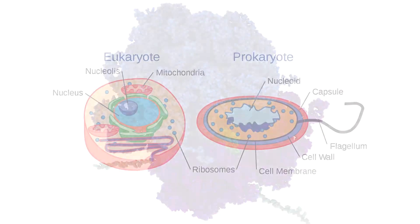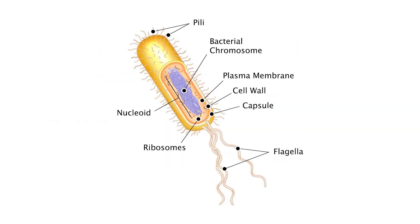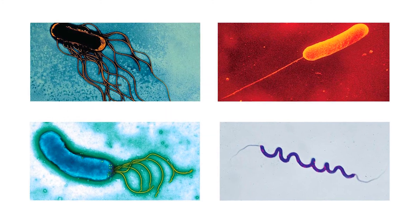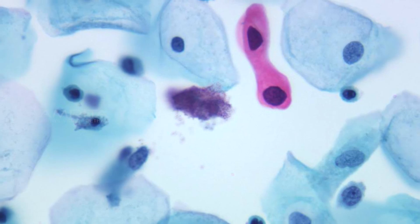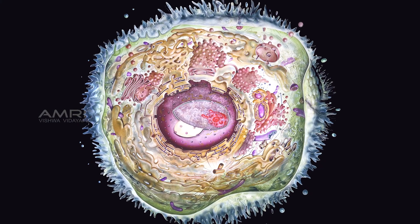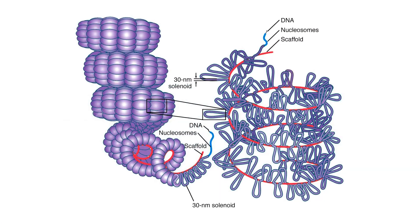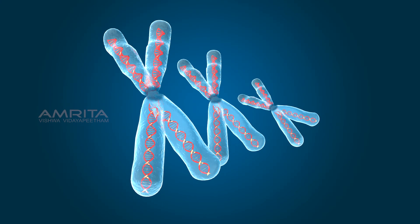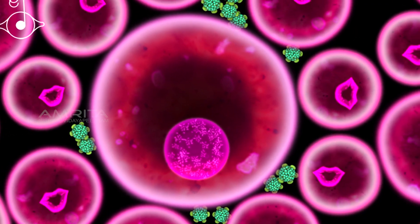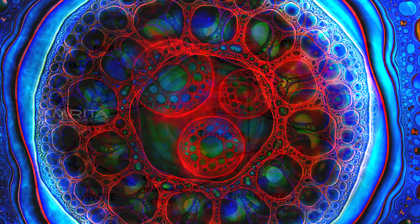The main differences between prokaryotic and eukaryotic cells are: prokaryotic cells do not have a defined nucleus and contain no membrane-bound organelles, but eukaryotic cells contain true nuclei and have membrane-bound organelles. Prokaryotic cells have circular chromosomes and lack histone proteins, while eukaryotic cells have linear DNA and contain histone proteins. The size of prokaryotic cells is smaller compared to eukaryotic cells.